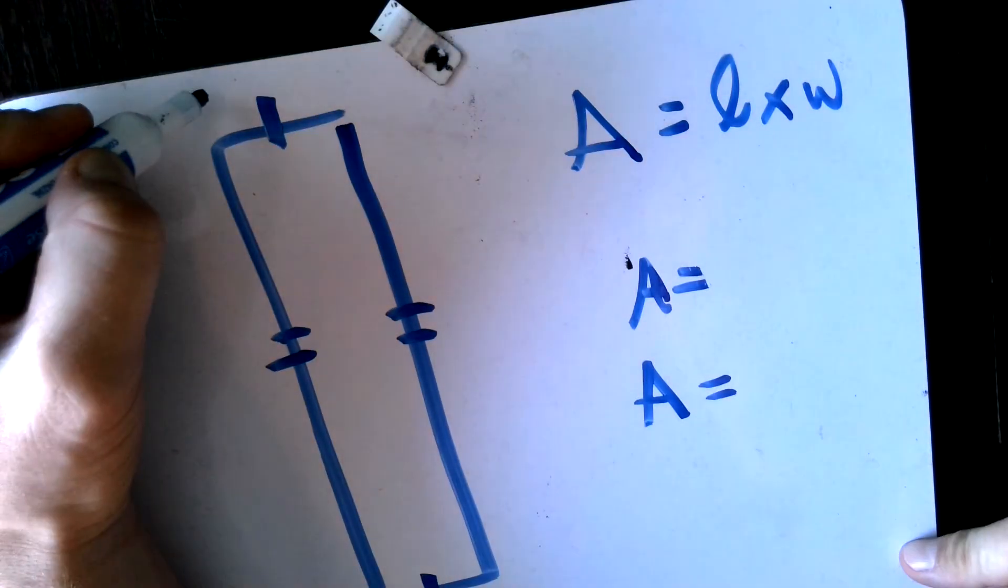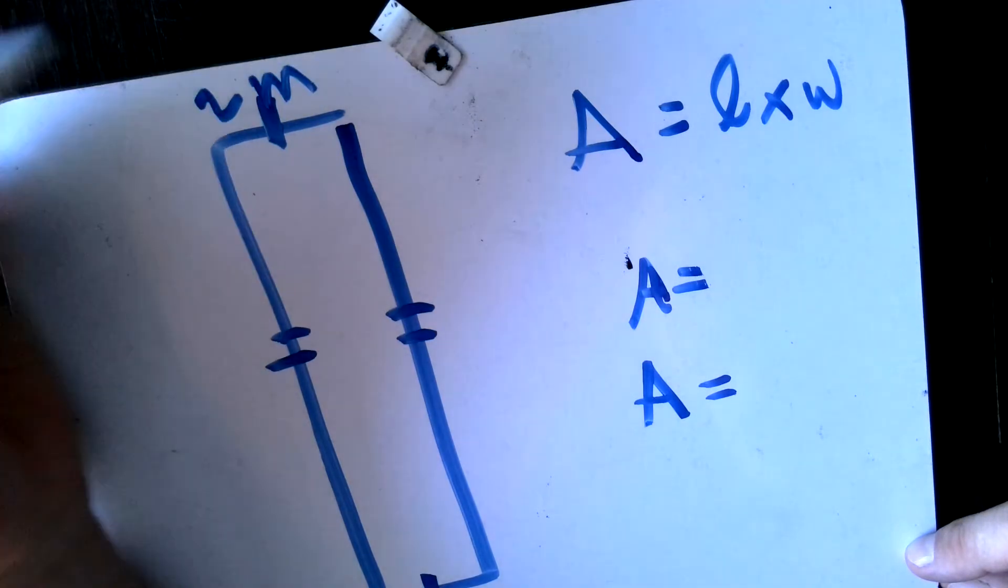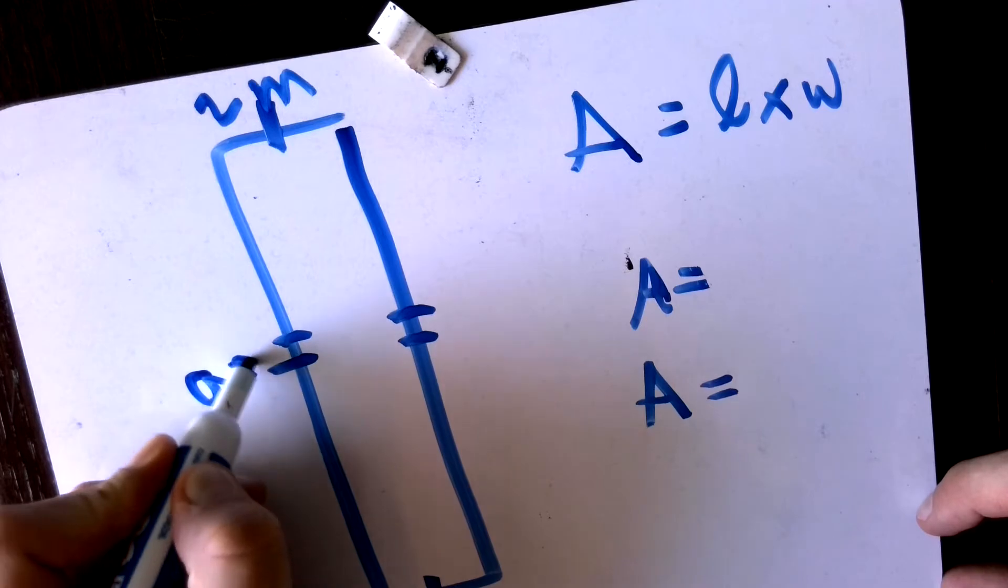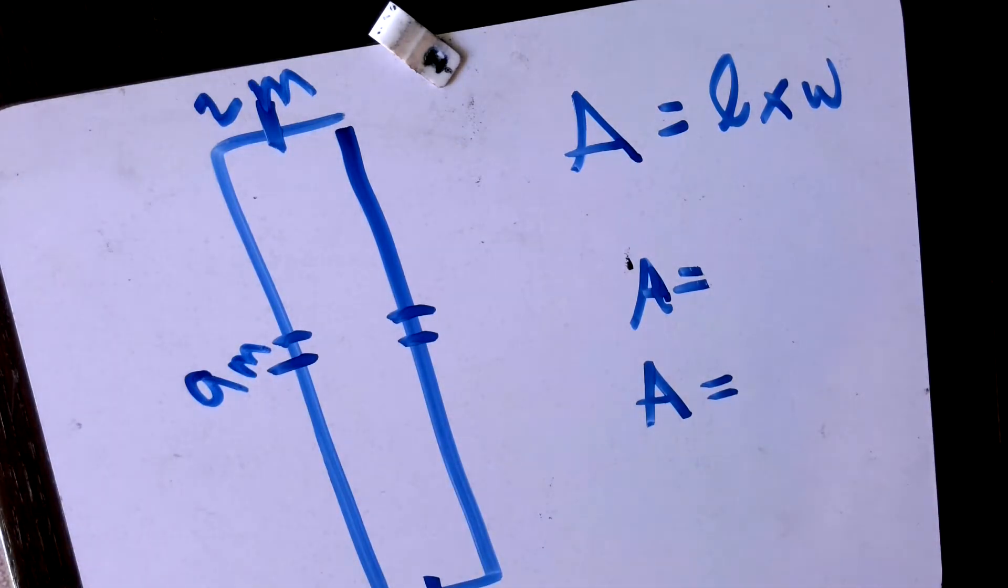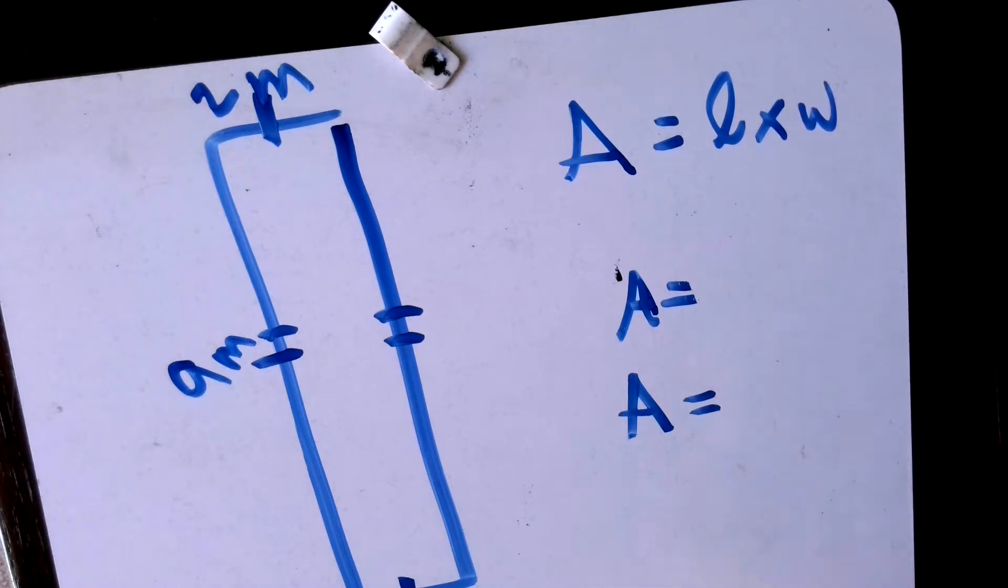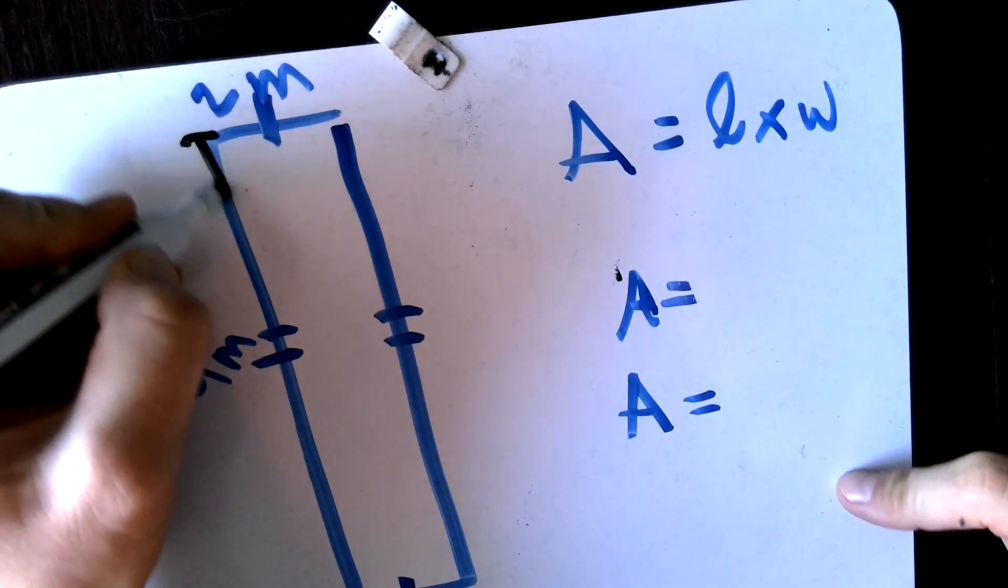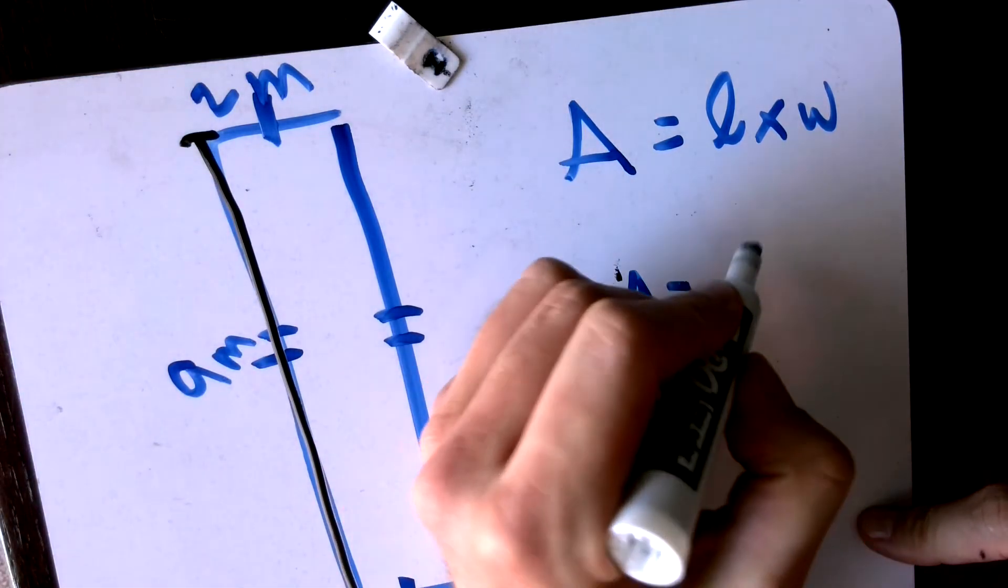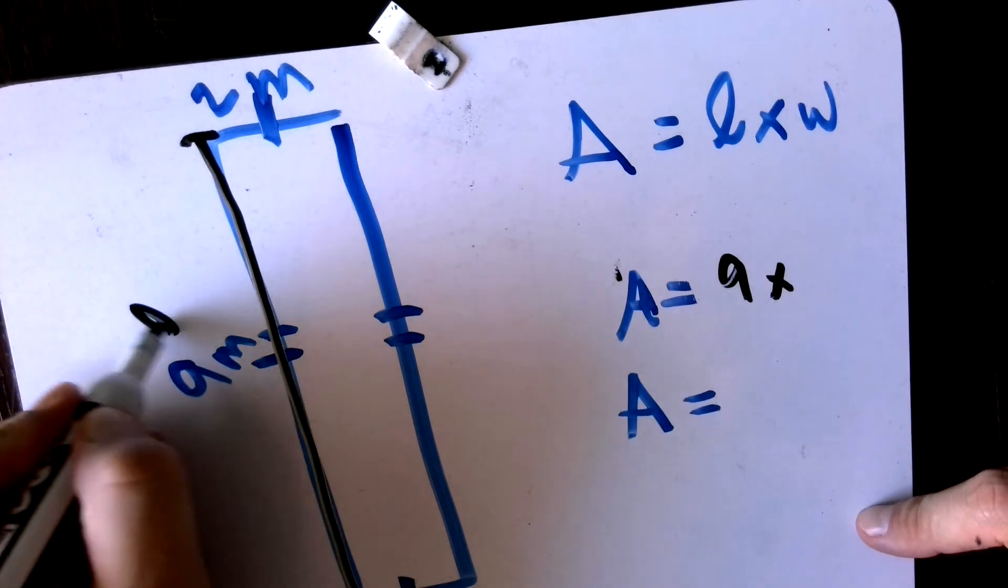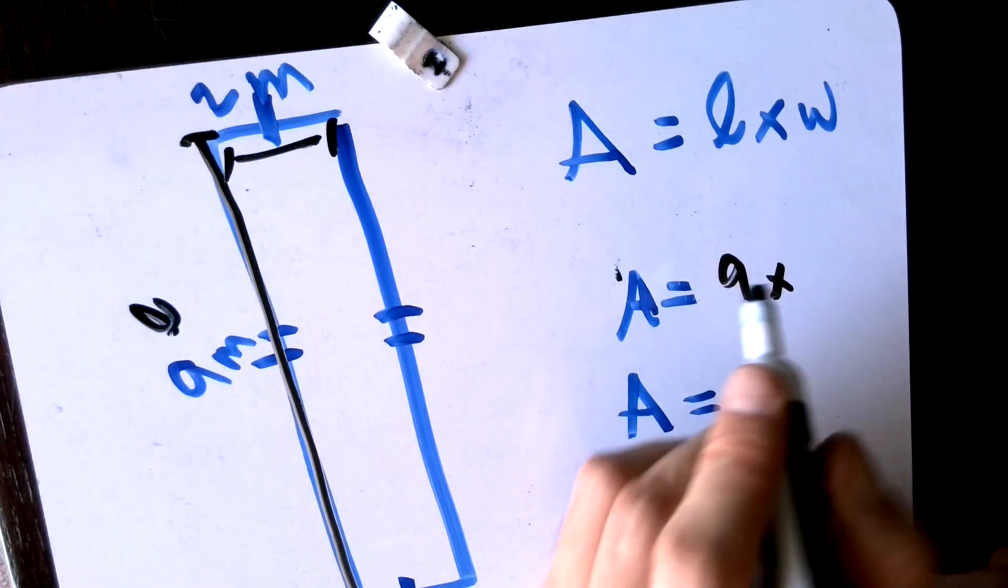So up here, I'm just going to call this guy, let's say you are two meters this time, and over here, this guy will be nine meters. So we know our area formula is length times width. All we have to do is make a substitution. What's our long side? Our long side is our nine. So this is our length, and our width, just our wide side, is two.